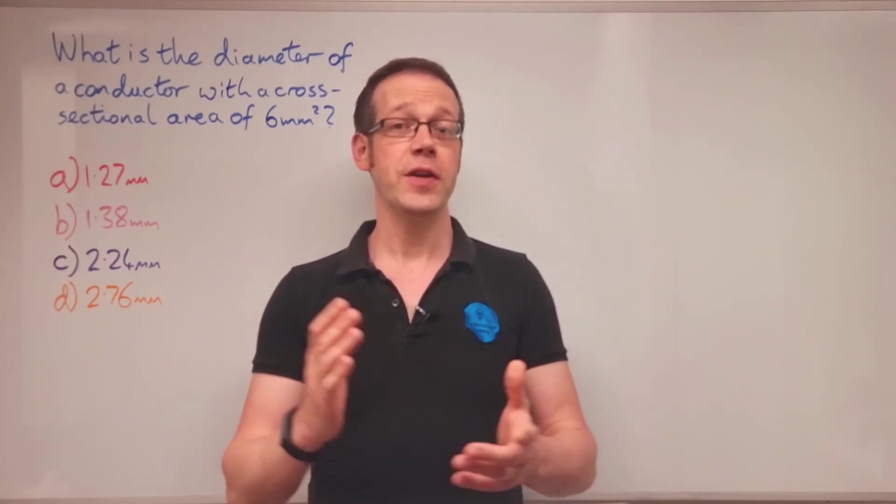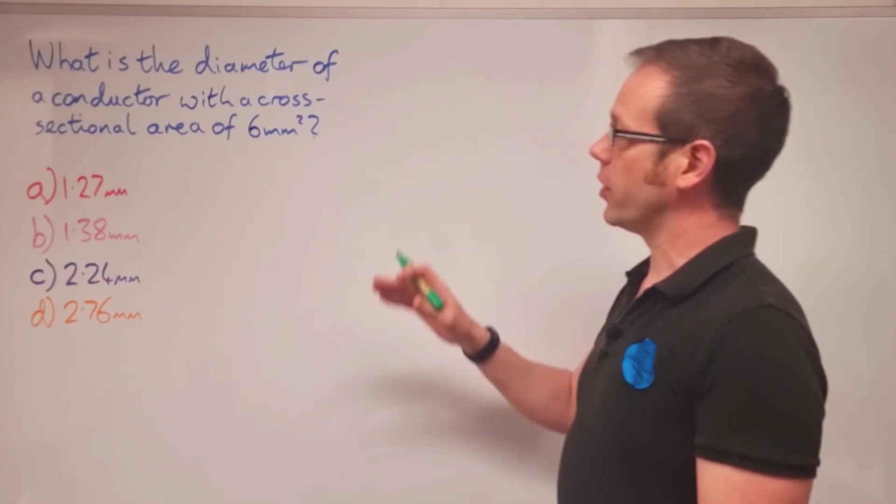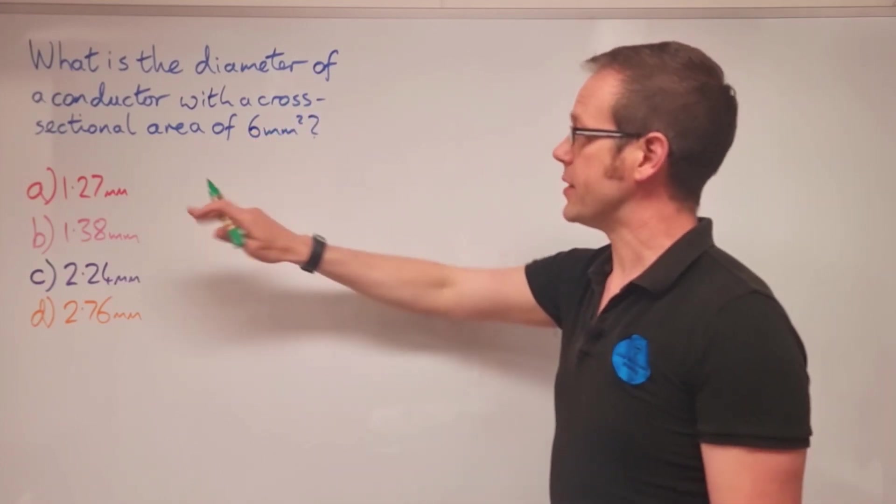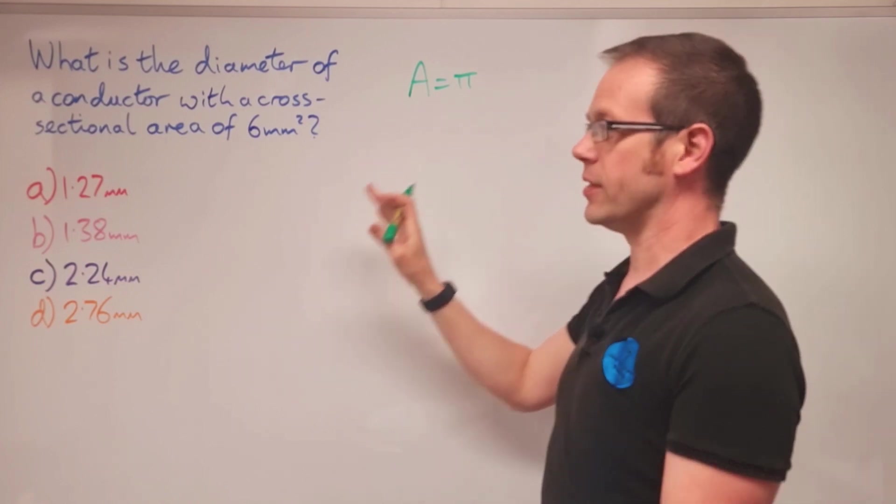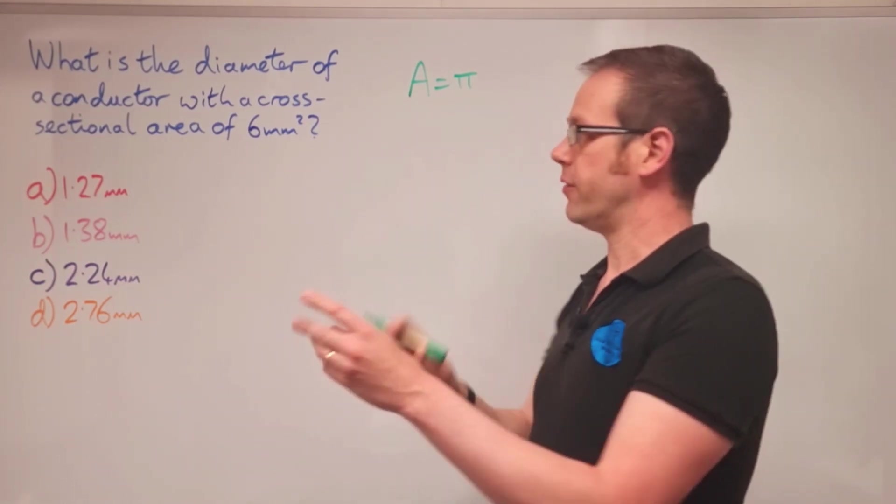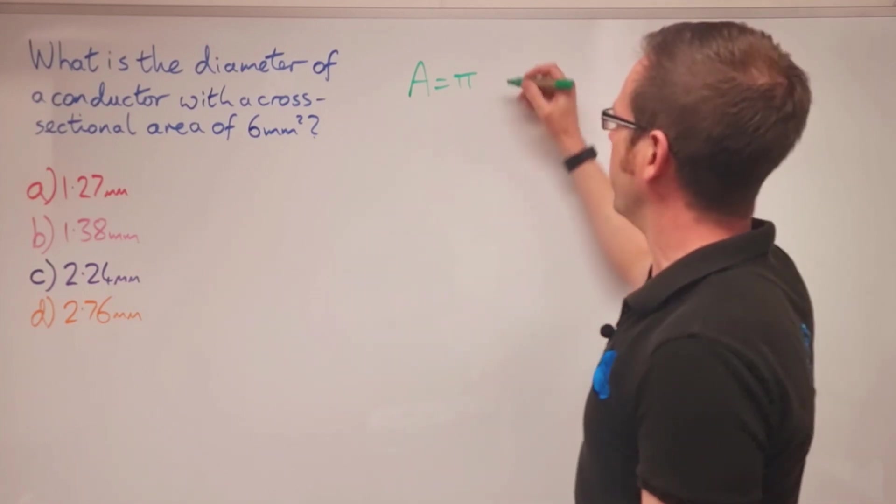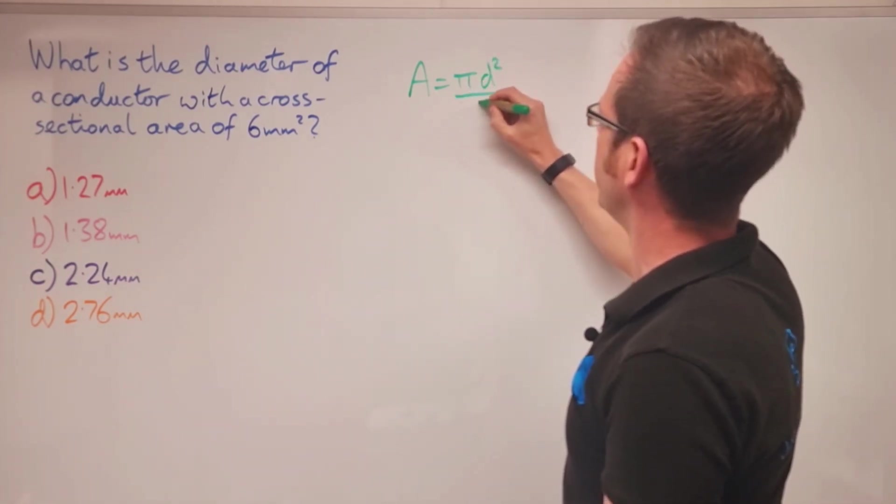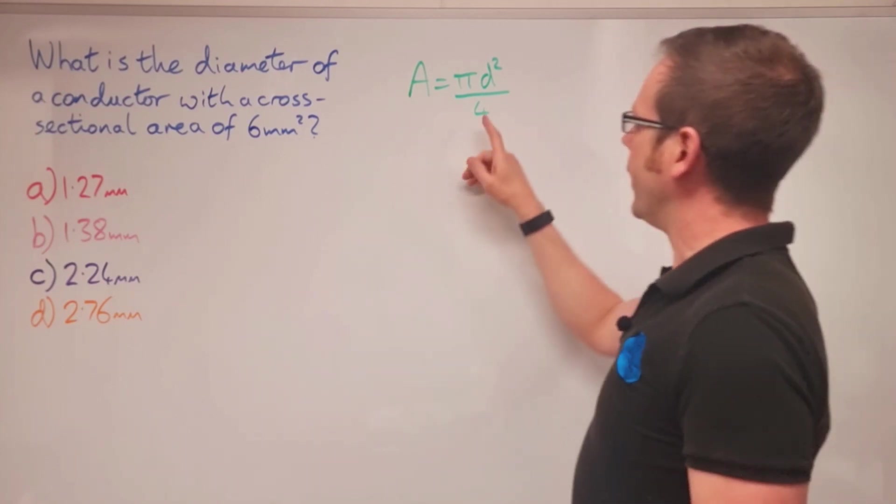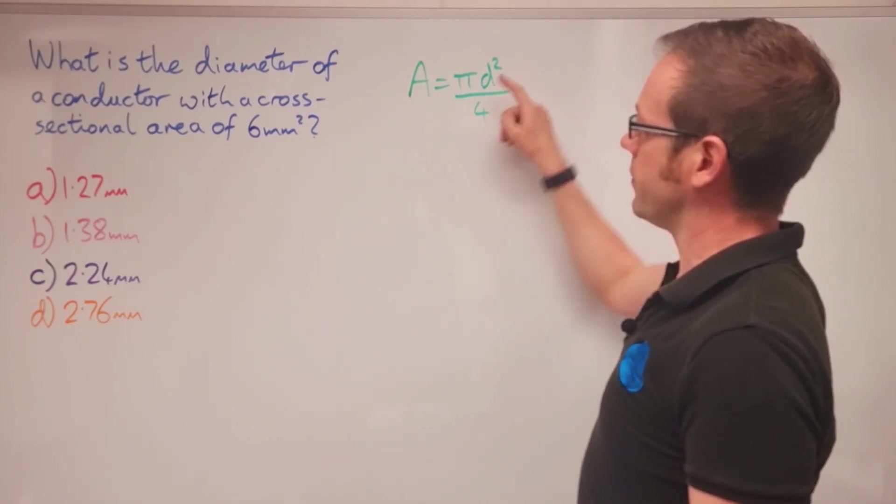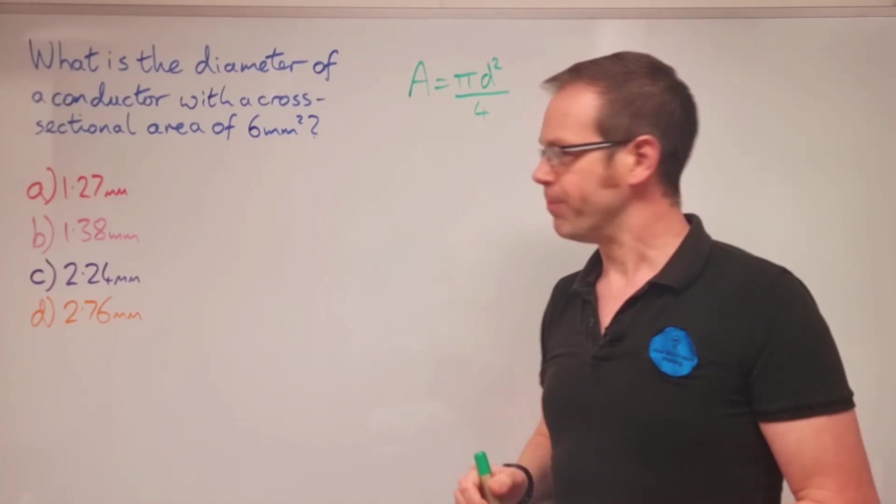The first way we're going to solve this question is by transposition. We've got the cross-sectional area of the cable and we're trying to find the diameter. We're going to use the formula A equals pi d squared over four. This is an alternative to pi r squared because we're trying to find the diameter rather than the radius. I think this is a slightly more engineering way of solving this question.